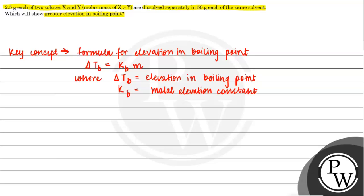Both of them will be the correct option. Kb is called ebullioscopic constant. And m is molality.